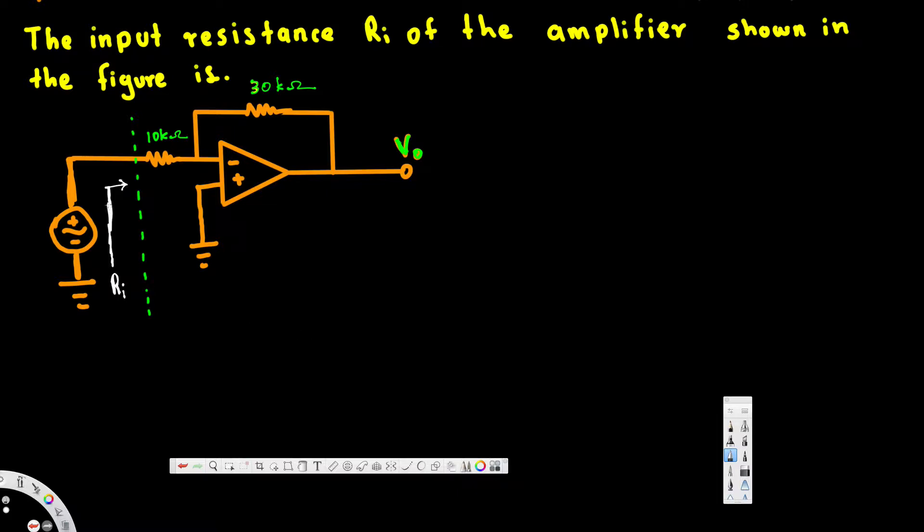Here we have the input resistance, that is Ri. If we say this is node A and the bottom part is ground, this is actually the effective resistance in between node A and the ground. Let's put the ground clearly. Node A and the ground. Now let's see how we can find it.